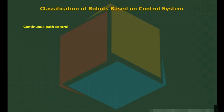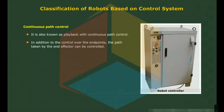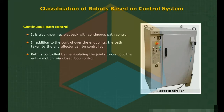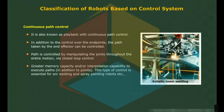Continuous Path Control, also known as playback with continuous path control, provides control over the end points as well as the path taken by the end effector. The path is controlled by manipulating the joints throughout the entire motion via closed loop control. This requires greater memory capacity and interpolation capability to execute paths in addition to points. This type of control is essential for arc welding and spray painting robots.